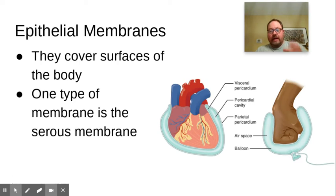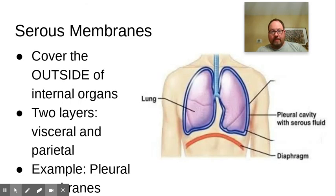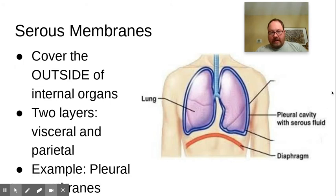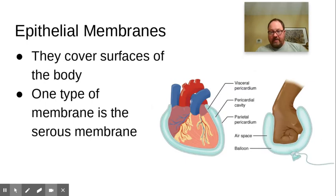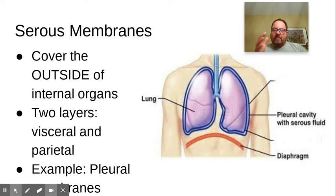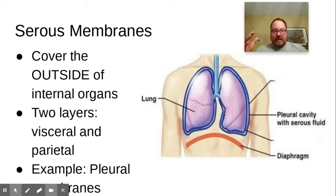A serous membrane is one particular type of epithelial membrane and it covers the outside of internal organs. Serous membranes generally speaking cover the outside of internal organs, and just like we saw in the previous image, it has two layers. Those two layers are called the visceral and parietal layer. Visceral means gut, so the visceral layer is tightly bound to the organ, and for parietal — think like perimeter — it's sort of around the outside of the organ.